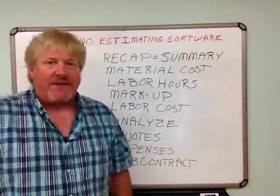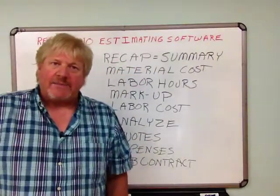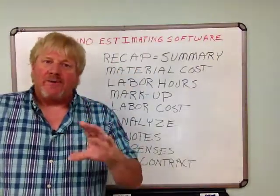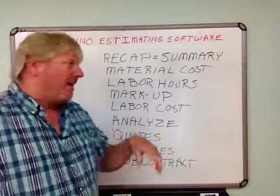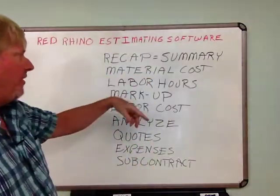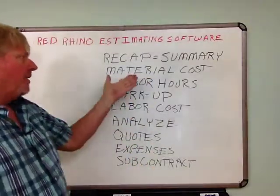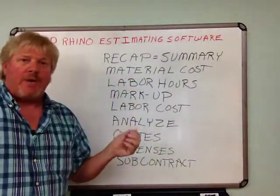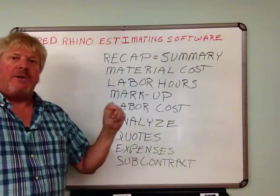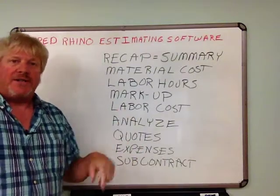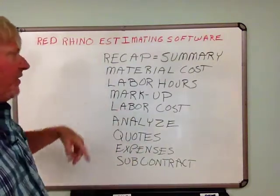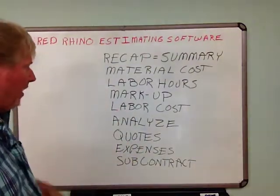A recap is a summary of your estimate — it summarizes everything. Line by line, it shows material cost. The recap is going to show you your total material cost in the estimate, and it shows the total labor hours.